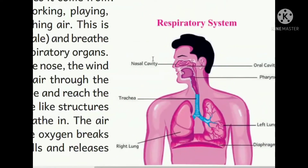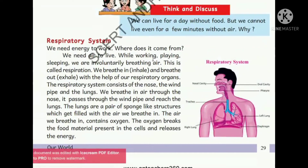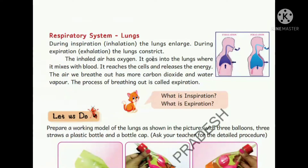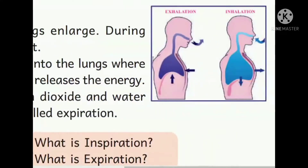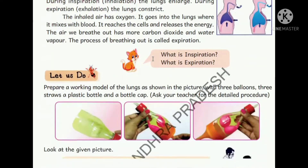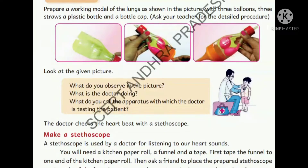Then air goes to the pharynx, then through a tube-like structure called the trachea, which divides into two parts and enters the two halves of the lungs. When we inhale, we take oxygen and the lungs enlarge. When we exhale carbon dioxide, the lungs return to their normal position.